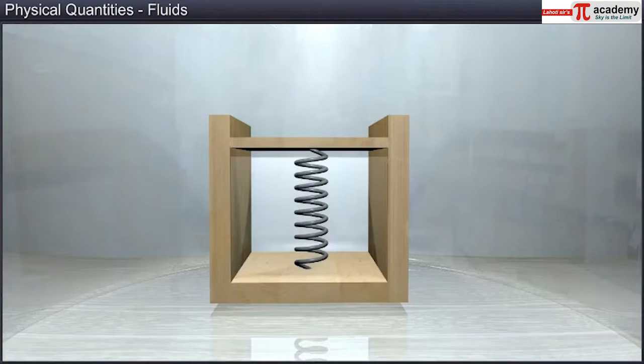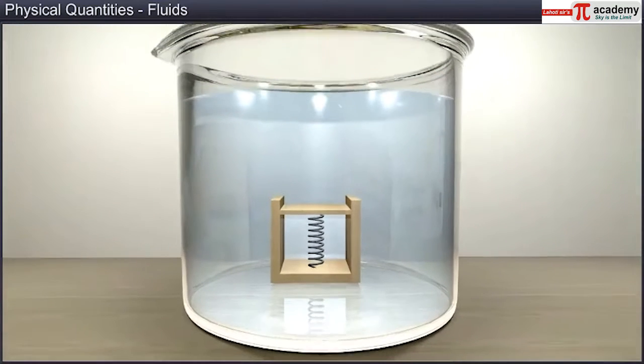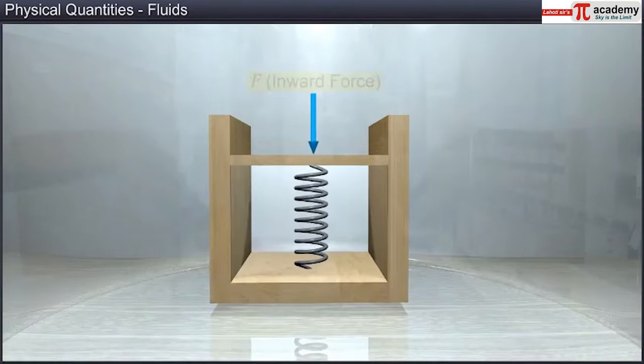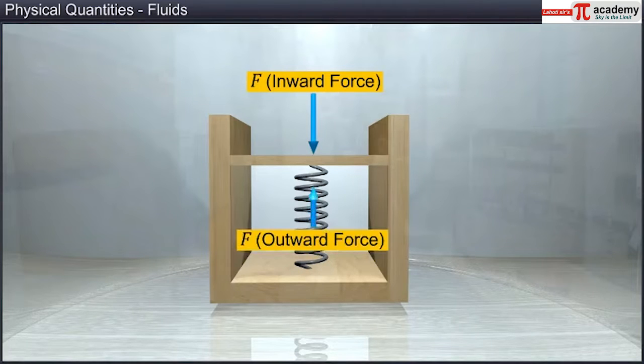The normal force exerted by the fluid at a point can be measured by the device as shown in figure. It consists of an evacuated chamber with a spring that is calibrated to measure the force acting on the piston. The inward force exerted by the fluid on the piston is balanced by the outward force due to the compression of the spring, which is measured by this device when placed inside the fluid.